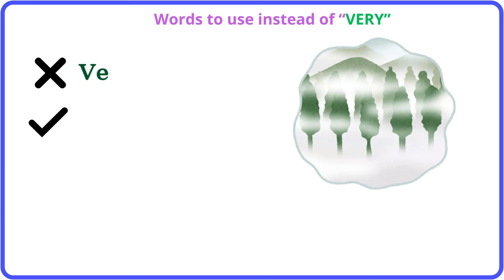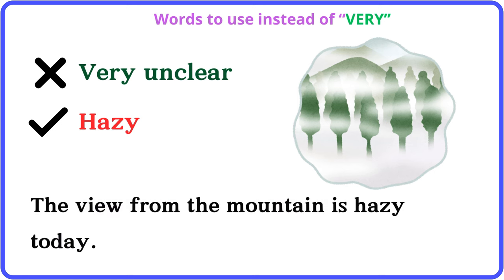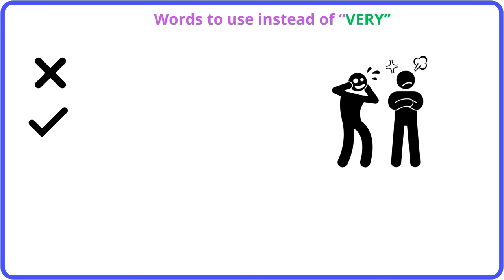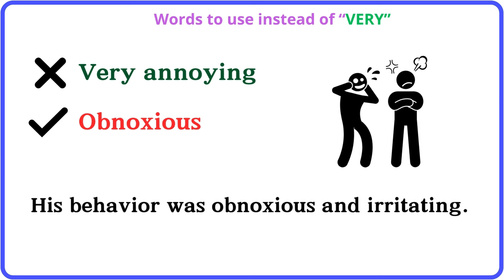Very unclear: hazy. The view from the mountain is hazy today. Very annoying: obnoxious. His behavior was obnoxious and irritating.